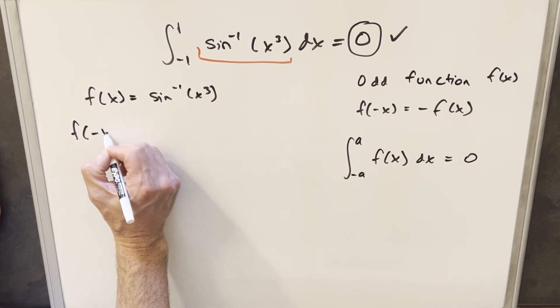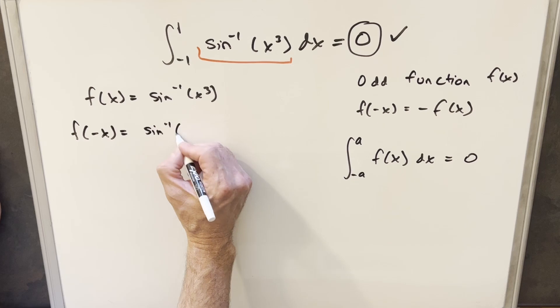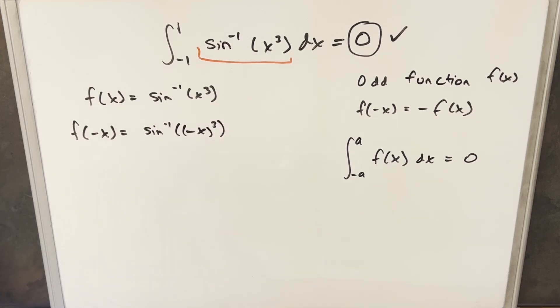So then what we can do is we can just take our function, and we'll plug in minus x here, just being careful. And then first, just dealing with the inner part here, when you cube out minus x cubed, you actually just get minus x cubed. So that's nice.